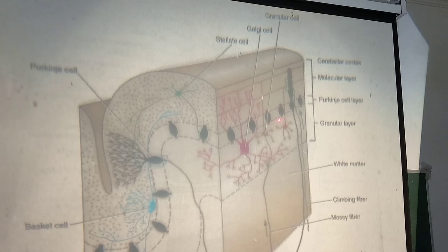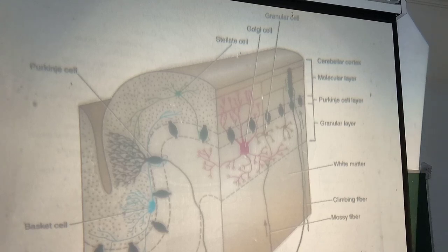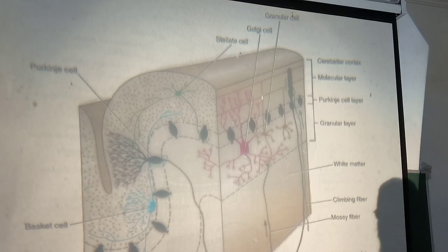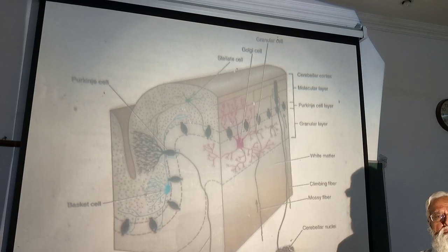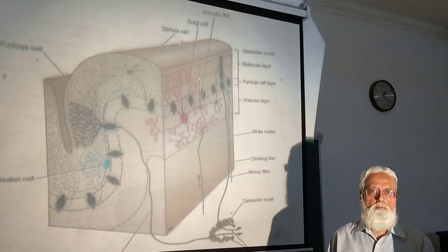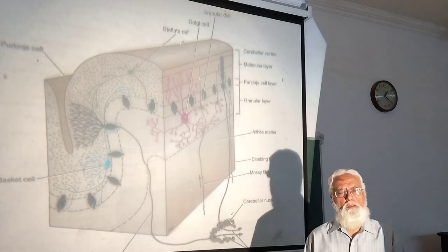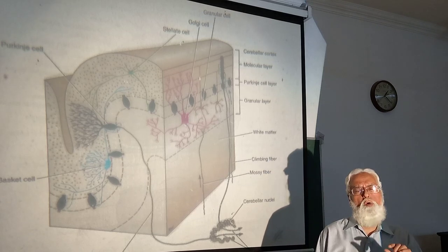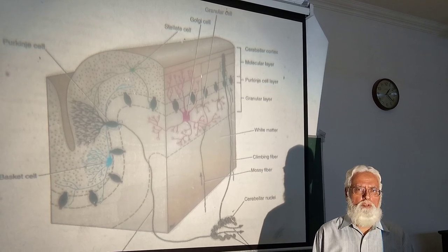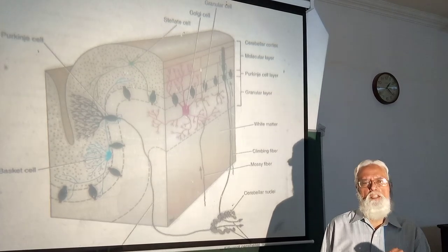This covers the histology of the cerebellar cortex with its three layers: molecular layer, Purkinje cell layer, and granular layer. Regarding the white matter of the cerebellum, a large amount of white matter is present in the cerebellar hemisphere, while only a small quantity is present in the vermis.